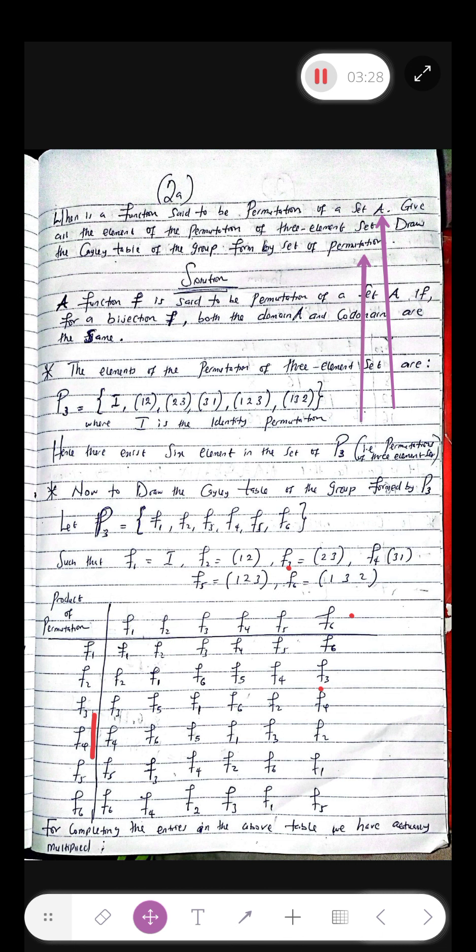Now since we already have this, how we go about the Cayley table? You have to draw a Cayley table of this group. When dealing with Cayley table, you have to find the product of all these elements. I'm supposed to write identity element here, then one two, then two three, followed by three one, then one two three, and then one three two. Write the same thing on the rows and the columns.